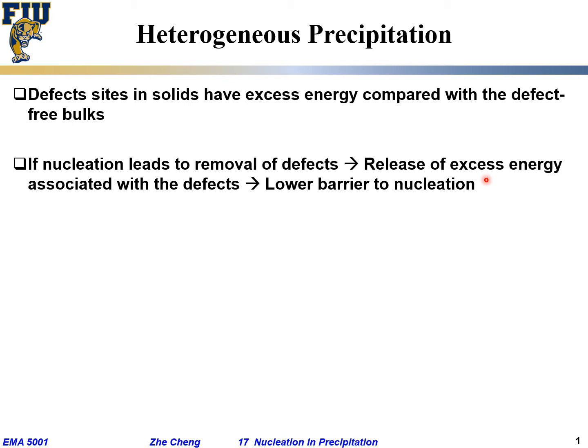If I have a grain boundary with excess grain boundary energy, and my new precipitate forms right at the grain boundary, in that formation process I'm eliminating a little bit of the grain boundary. That release of excess energy associated with the defect — whether the dislocation or the grain boundary — would help lower the barrier for nucleation. This is similar to what we dealt with before for solidification.